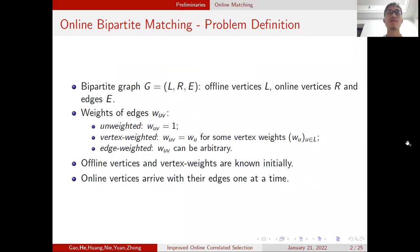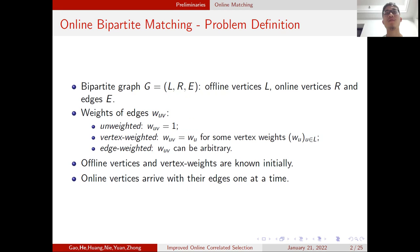Let's see the online bipartite matching problem. We are given a bipartite graph G, which contains a set of offline vertices L, a set of online vertices R, and a set of edges E. There are three kinds of settings: first, the unweighted case where all edge weights are equal; second, the vertex-weighted case where offline vertices have a certain weight and edge weight is defined by the linked offline vertex; and third, the edge-weighted case where all edge weights can be arbitrary. The vertex-weighted case is a generalization of the unweighted case, while edge-weighted is a further generalization of vertex-weighted.